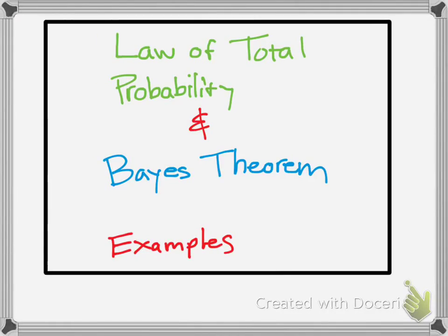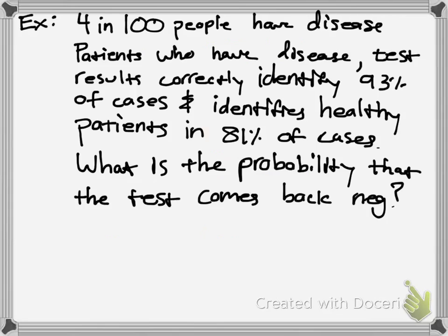Hello YouTube. We're going to go over some basic problems on the law of total probability and Bayes' theorem. These are some pretty interesting mathematical concepts, but right now I'm just going to go over two examples, one of each. If you want to know more about how these probability ideas work, you can check out some stuff online. So we're just going to jump into an example.